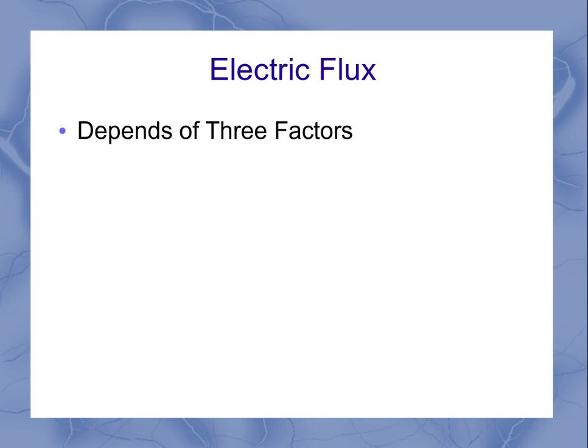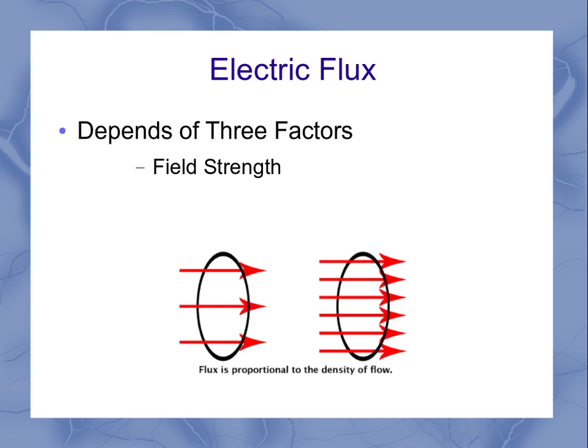First, it's going to depend on the field strength. Remember that in electric fields, the stronger the magnetic field, the more dense the lines were. So a stronger field is going to have more lines, and therefore you can have more lines going through a particular surface.